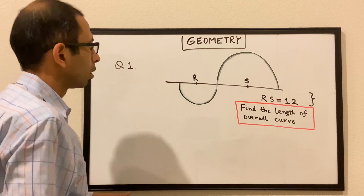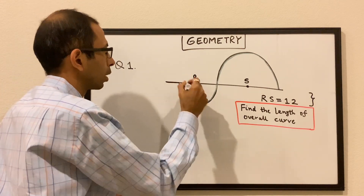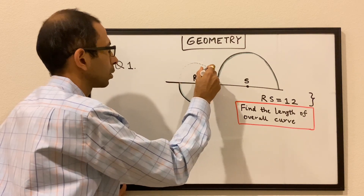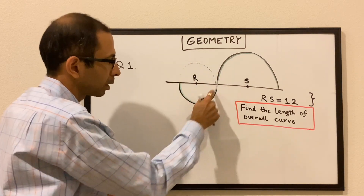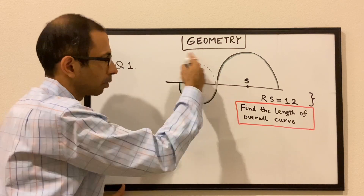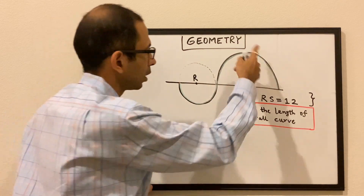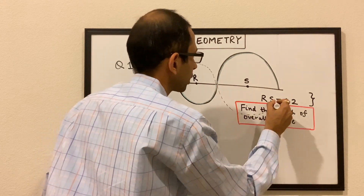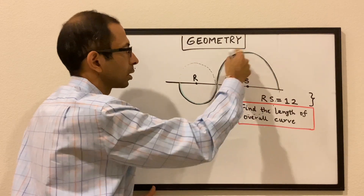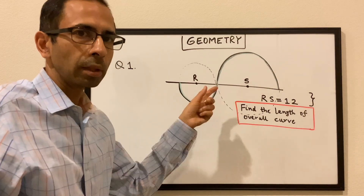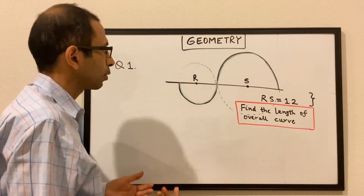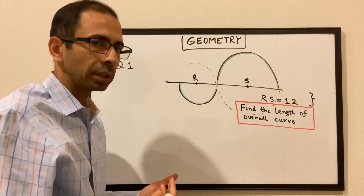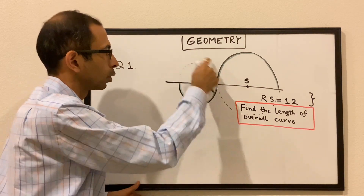We can visualize this as a semicircle of the overall circle. This is the overall circle, and this becomes the semicircle of this smaller circle. Similarly, on the bigger one, we can consider this as a big circle, and this portion is nothing but the semicircle of the bigger circle. So essentially, let's find the circumference of this smaller circle and divide by 2, because this is the half of the overall circumference.